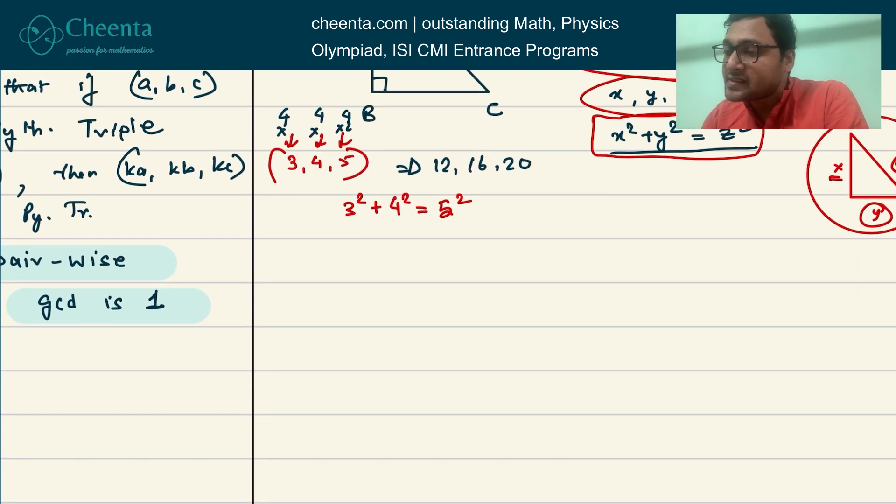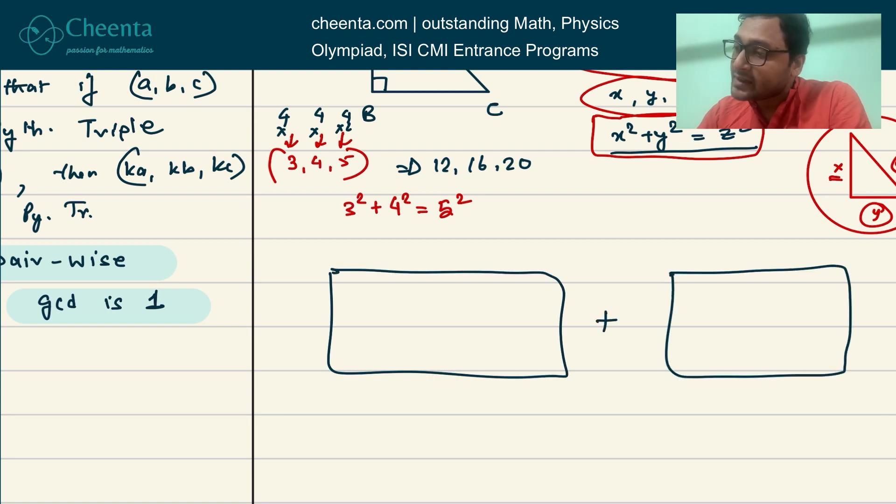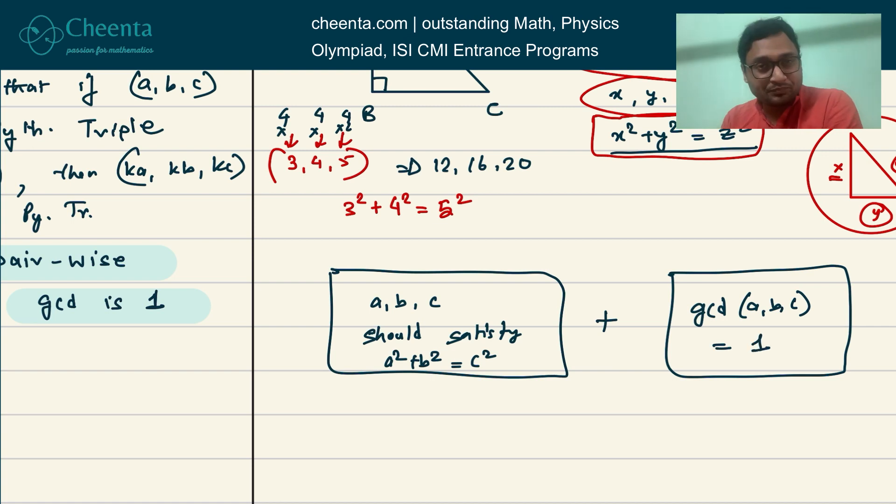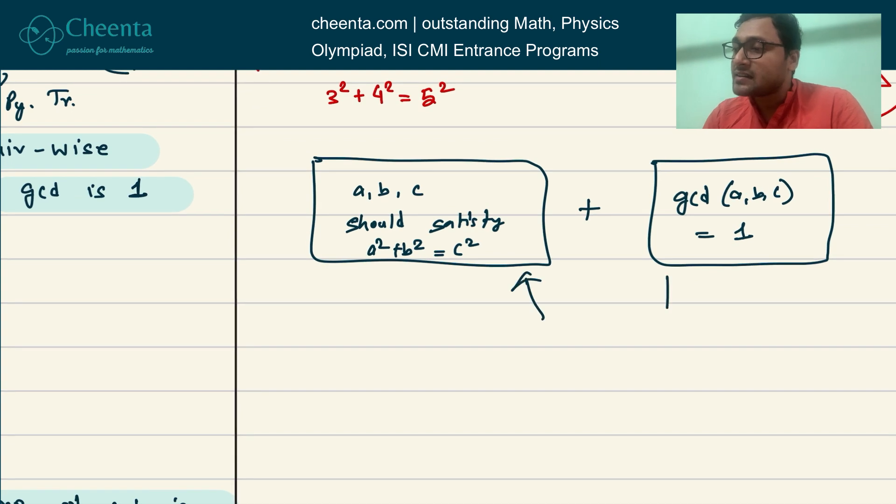Pythagorean primitives are Pythagorean triples with GCD 1. So basically there are two pieces of condition. The first condition is A, B, C should satisfy A² + B² = C². The second condition is GCD of A, B, C—that is the greatest common divisor of A, B, C—is 1.